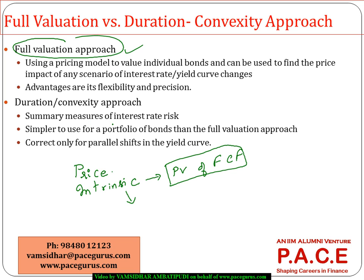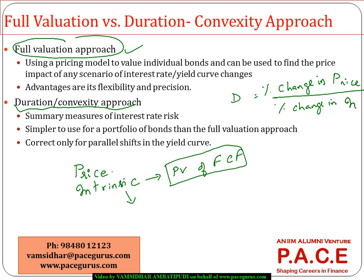The other approach is the duration-based approach. If you remember how we defined duration: percentage change in the price of the bond divided by the percentage change in yield or interest rate. Using the duration-based approach, I can estimate what the percentage change in the price of the bond will be — whether it goes up by 2% or down by 5% — and find the modified price.